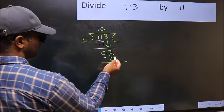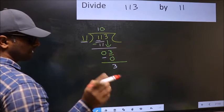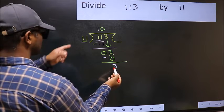Over here, we did not bring any number down. And 3 is smaller than 11.